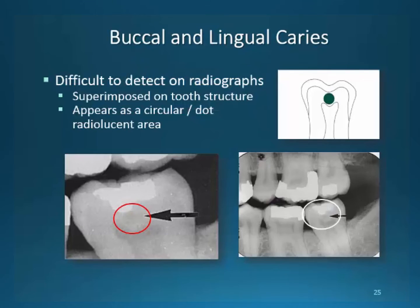Buccal and lingual caries are similar to occlusal caries when comparing location and appearance. They tend to have a more circular, centered appearance. As with occlusal decay, they are difficult to detect and can only be done with a very trained eye and quite a bit of experience. These lesions may appear more rounded and slightly below the occlusal surface.